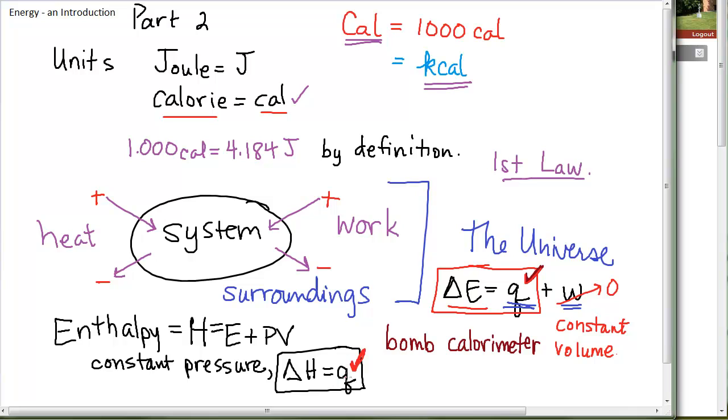So an enthalpy change is equal to the heat measured at constant pressure, the heat that either flows in or out. And we can eliminate trying to keep track of the work by making the work equal zero and just monitoring the heat that either flows into or out of our system to get the energy change. In this case, the energy change is a delta H, an enthalpy change, whereas over here, it is the energy change. So let's look at this idea of enthalpy in a little more detail as far as the energy change for our system.